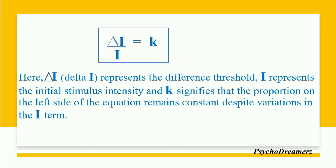In the equation Δi/i = k: delta-i represents the difference threshold — the minimum difference detectable 50% of the time. The i in the denominator represents the initial stimulus intensity. And k signifies the proportion — the left side of the equation remains constant despite variations in the stimulus. This means the difference threshold divided by the initial stimulus intensity is always equal to the constant k.